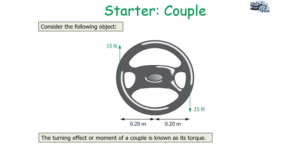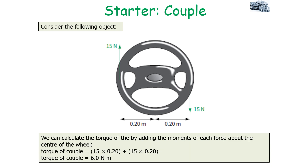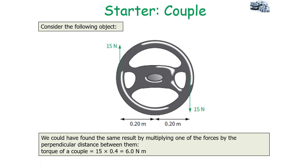The turning effect or moment of a couple is known as its torque. We can calculate the torque of the wheel by adding the moments of each force about the centre of the wheel. The torque is 15 × 0.2 plus 15 × 0.2, which equals 6 newton metres. We could also find the same result by multiplying just one of the forces by the perpendicular distance between them: 15 × 0.4 equals 6 newton metres.